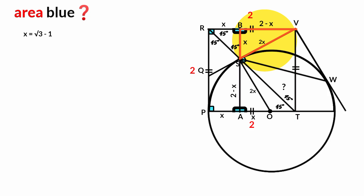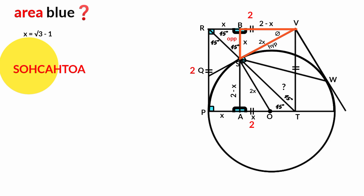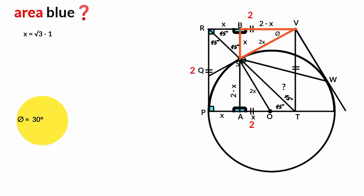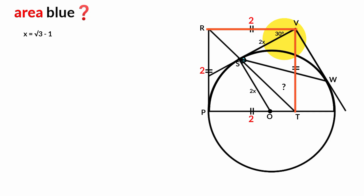Coming to this right-angle triangle, we can use SOHCAHTOA. Taking this angle as theta, the opposite side is x and the hypotenuse is 2x. By SOH: sin θ = opposite over hypotenuse = x over 2x = 1/2. Therefore θ = sin⁻¹(1/2) = 30 degrees. Since this whole angle is a right angle, the remaining part is 90 minus 30 = 60 degrees.